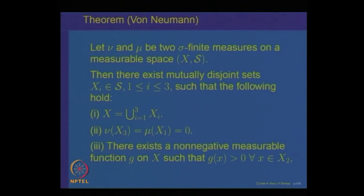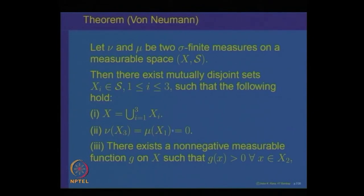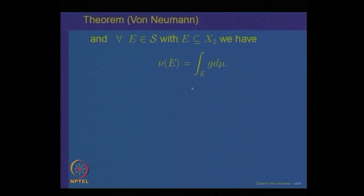To summarize the von Neumann decomposition theorem: given two sigma finite measures nu and mu, we can decompose X into three parts — X equals X1 union X2 union X3 — with nu of X3 equal to 0, mu of X1 equal to 0, and on the middle part X2 the measure nu can be represented in terms of mu by the property that nu of E equals the integral of G d mu. This is called von Neumann's theorem and it is a very useful theorem.